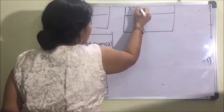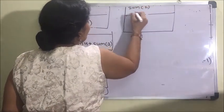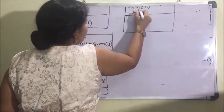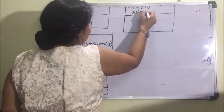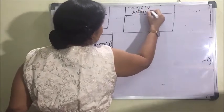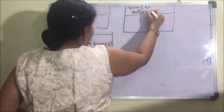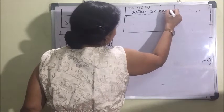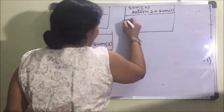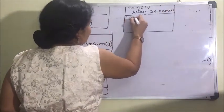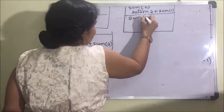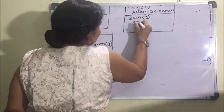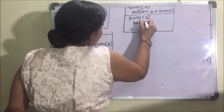Sum(2). So sum(2) will return 2 plus sum(1), and sum(3) remains return 3 plus sum(2) as it is.